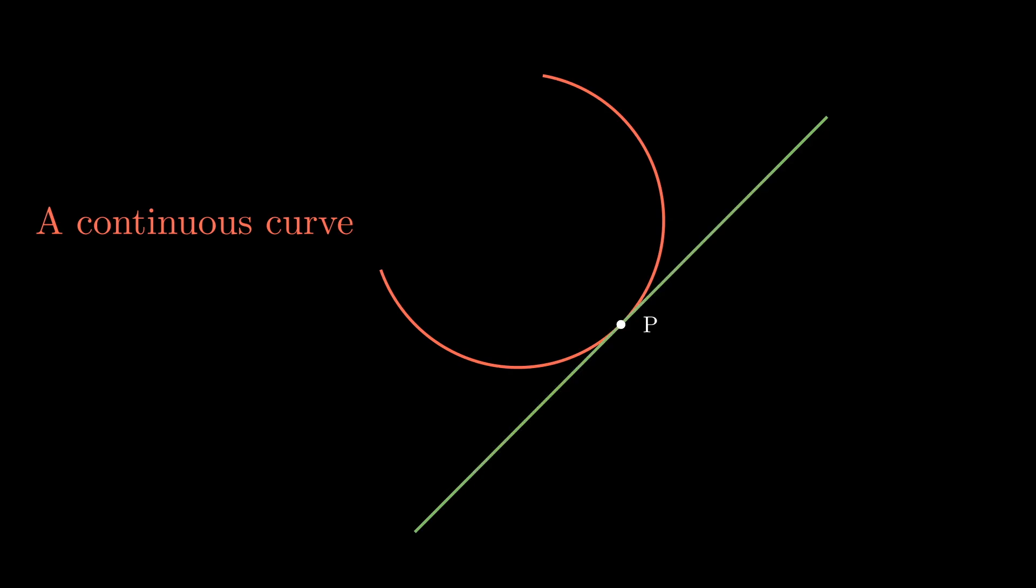So if there is a tangent at the point P, then any two points on the curve on the same side of P that are sufficiently close to P will form secant lines that are very close to the tangent line, and in particular, close to each other. Therefore, the angle between those secant lines will be small.